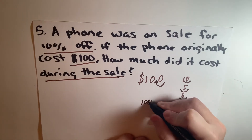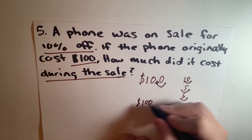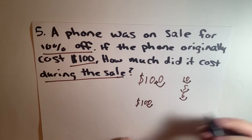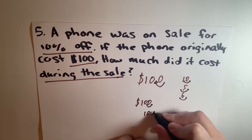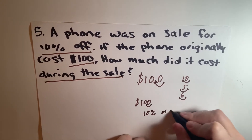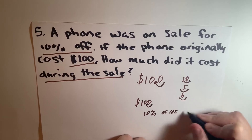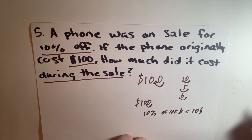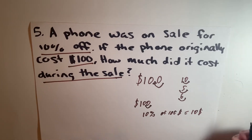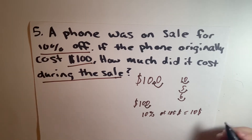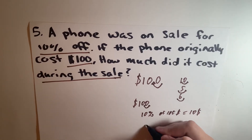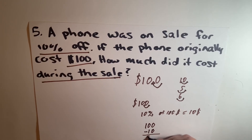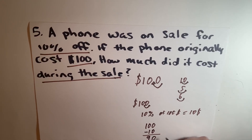So for $100, 10% would be $10. We know that 10% of $100 equals $10. Now we're not done yet because we want the sale price — this is what it took off. So it's going to be 100 minus 10 equals $90.